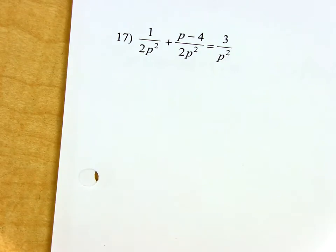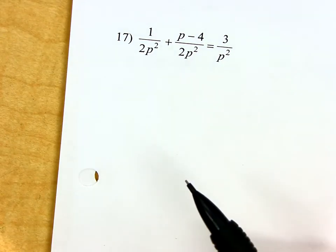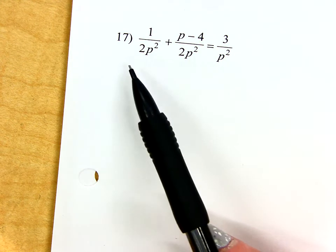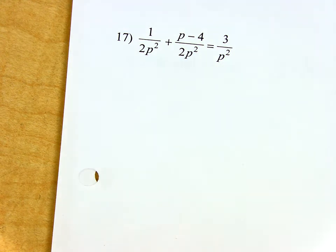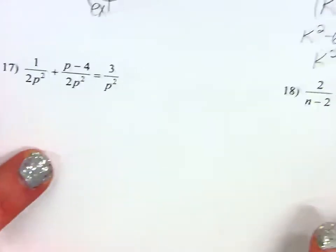Okay, we're solving rational equations. The easiest thing for you to do, if you can get all of your denominators to match, you actually get to ignore those denominators for a minute. Watch this for a second.